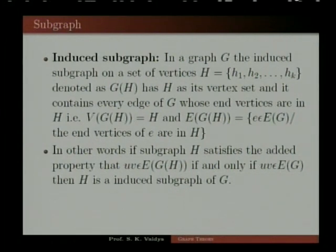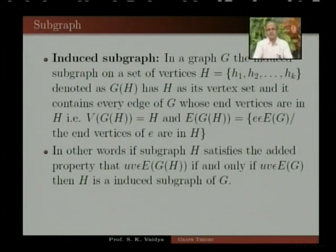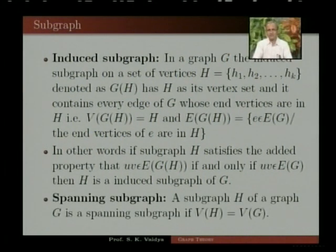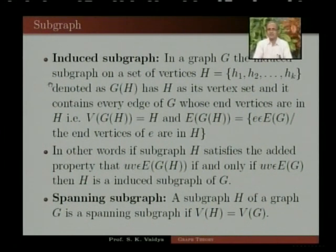In other words, a sub-graph H is an induced sub-graph of G if and only if for every edge UV in G where both U and V are in H, the edge UV is also in H. Spanning sub-graph: a sub-graph H of a graph G is a spanning sub-graph if their vertex sets are identical, that is, V(H) equals V(G).